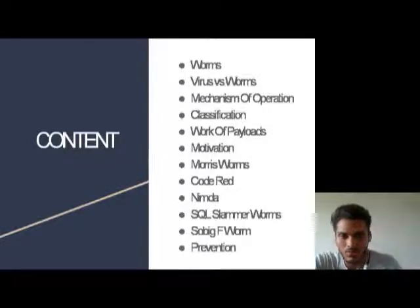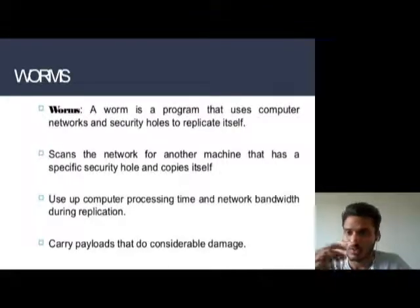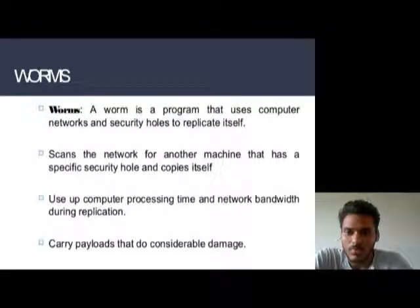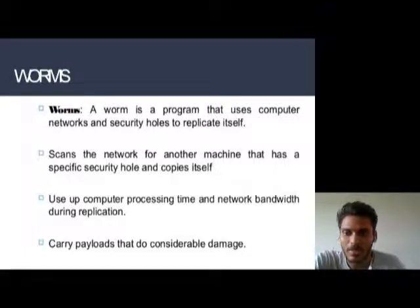Starting with worms — what are worms? A worm is a program that uses computer networks and security holes to replicate itself. It scans the network for another machine that has a specific security hole and copies itself. Worms use computer processing time and network bandwidth during replication and can carry payloads that do considerable damage.